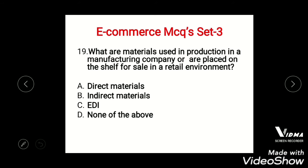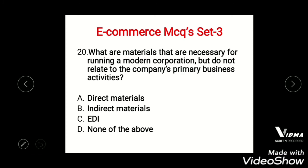Question 18: What are materials used in production in a manufacturing company or placed on the shelf for sale in a retail environment? Options: A) Direct materials, B) Indirect materials, C) ADI, D) None of the above. The right answer is A, direct materials.